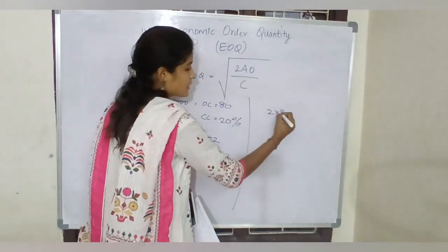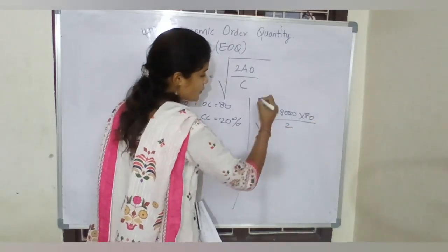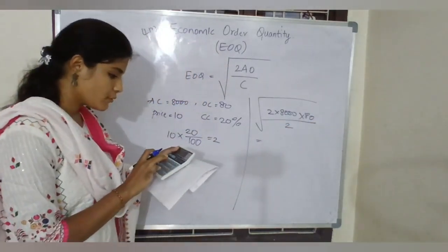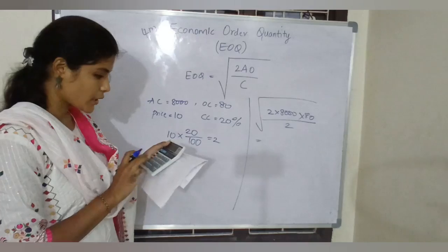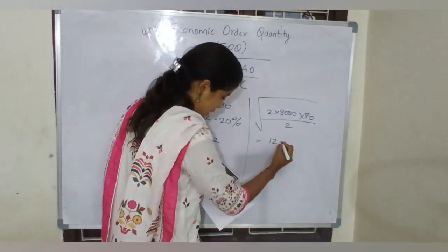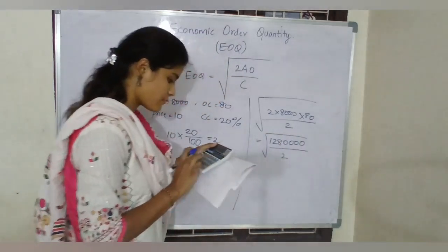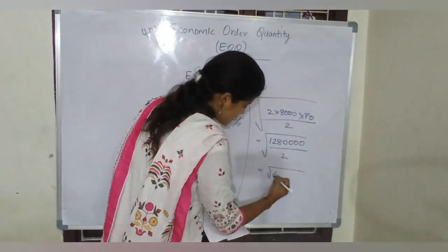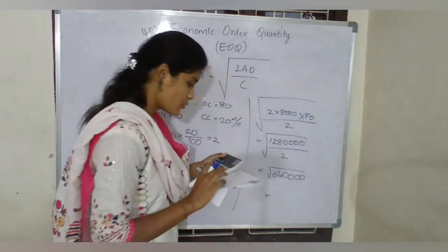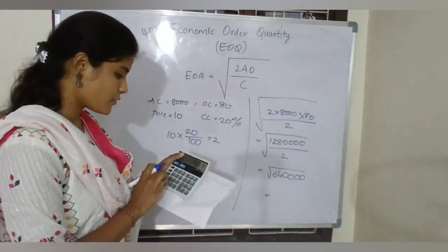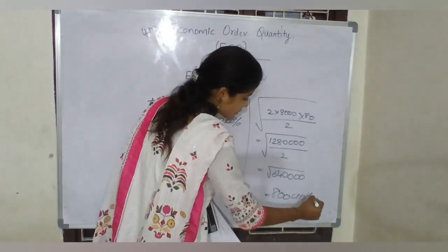So 2 into annual consumption of 8000 into ordering cost of 80, divided by carrying cost of 2. That gives us 2 into 8000 into 80 equals 12,80,000. Divided by 2 gives us under root 6,40,000. The square root of 6,40,000 is 800 units. So 800 is your answer.